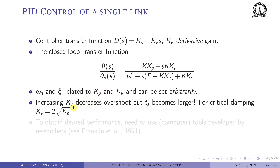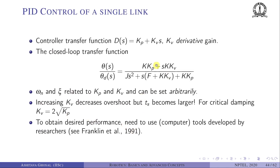To independently choose ωn and ψ, we need a proportional-plus-derivative (PD) controller with transfer function D(s) = Kp + Kv·s, where Kp is the proportional gain and Kv is the derivative gain. The closed-loop transfer function becomes θ(s)/θd(s) with denominator J·s² + (F + K·Kv)·s + K·Kp. Now we can choose Kp to set ωn and Kv to independently set ψ. Increasing Kv decreases overshoot but increases settling time. For critical damping, Kv = 2·√(Kp).